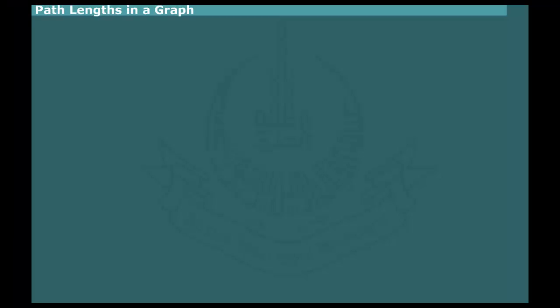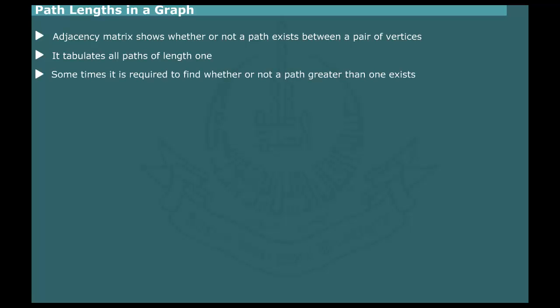Path Length in a Graph. The adjacency matrix shows whether or not a path exists between a pair of vertices. In other words, it tabulates all paths of length 1 in a graph. In some applications, we are interested to know whether there are paths of length greater than 1 between a pair of vertices.